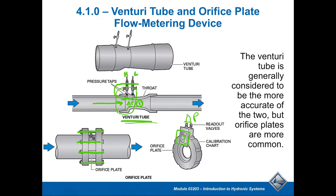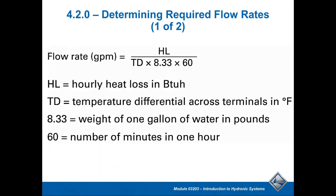My preference would be the Venturi tube, but I'd use whatever is available. For commercial applications, the way many of these devices work is by taking the square root of the delta P and multiplying that number times the coefficient or CV of the device. Based on that, you can calculate the actual GPM of the system. There are ways to do this in the field.